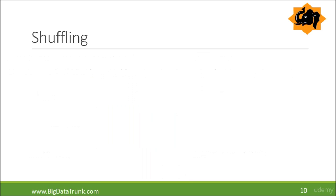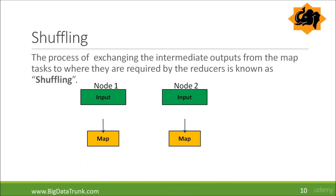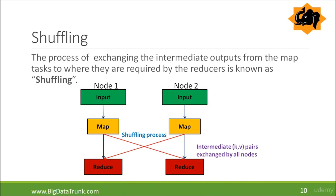After the mapper finishes, there is one more phase in MapReduce called shuffling and sorting. Shuffling is basically the movement of intermediate records from mappers to reducers — the process of exchanging the intermediate outputs from the map tasks to where they are required by the reducers. After shuffling, reducers will sort the records.